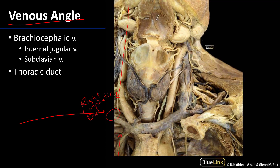These three trunks are known as the jugular trunk from the head and neck, the subclavian trunk from the upper limb, and the bronchomediastinal trunk from the thorax.